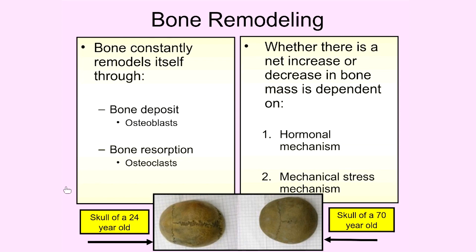To show you an example of this, if you look at a skull of a 24-year-old, you can see the suture lines where bones actually grew together in the fetus. But if you look at the skull of a 70-year-old, those suture lines have basically disappeared. The reason is that all the bone that was there when the person was younger has been resorbed, broken down, and replaced with new bone — so bone is remodeling all the time.